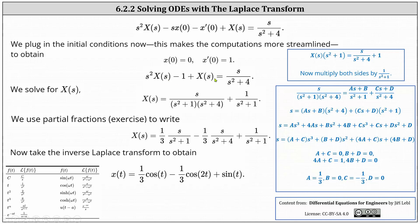Our next step is to solve for big X of s. The first step, we add one to both sides and then factor out big X of s, which gives us big X of s times the quantity s squared plus one equals s divided by the quantity s squared plus four plus one. Now we multiply both sides by one over the quantity s squared plus one, which gives us big X of s equals s divided by the product of the quantity s squared plus one and s squared plus four, plus one divided by the quantity s squared plus one. To end up with x of t on the left side, we'll have to take the inverse Laplace transform of both sides. We can find the inverse Laplace transform of the second fraction in its current form, but to find the inverse Laplace transform of the first fraction on the right side, we'll have to perform partial fraction decomposition.